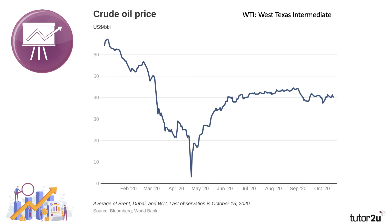Here's a chart showing the world price of crude oil. It's an average of Brent, Dubai and West Texas Intermediate oil, all the way from the start of 2020 through to the middle of October 2020. You can see there was a dramatic collapse in the world price of oil on the futures markets. The price of oil for future delivery was close to zero at one point in late April, early May 2020. It's recovered a little bit since to about $40 per barrel, but it's still well below where it was this time last year.